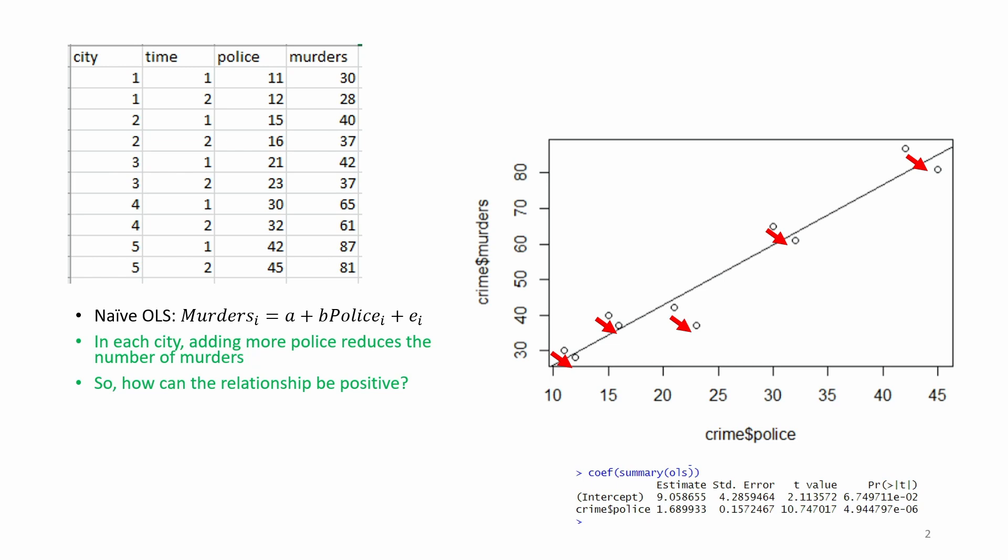The answer is that the standard regression model needs to be changed to take into account the panel structure in the data. Technically we have a problem of unobserved heterogeneity. Large cities have both more police and more murders. Another way of saying the same thing is that we have omitted variable bias, OVB.